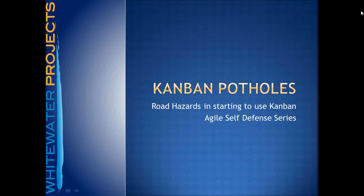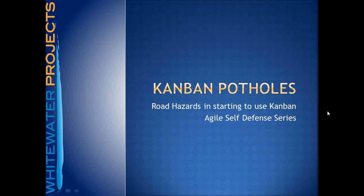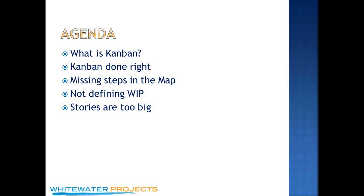I wanted to make sure I'm recording — yes, I am recording. So if anyone can't attend today, we'll make sure that they can hear the recording. The first thing we're going to talk about is what is Kanban, and that covers the Kanban done right part of it. Then we'll talk about three common problems: one is missing steps in the map, two is not defining the WIP, and three is that your stories are too big, which is a common problem in almost every actual practice.